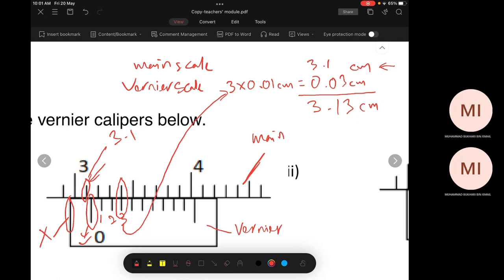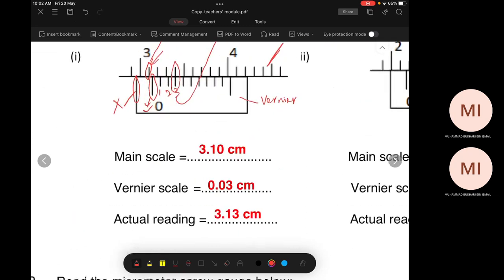It coincides with the number 3 on the vernier scale. So 3 multiplied by 0.01. What is this? This is the sensitivity. Sensitivity of vernier scale. Different instruments have different sensitivity. So you have 3.13. Here it is.